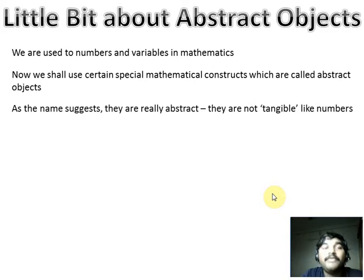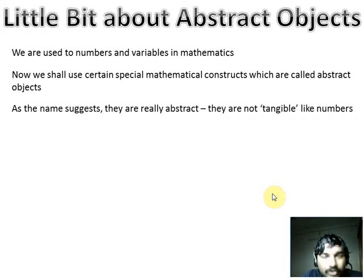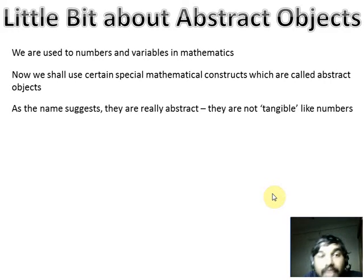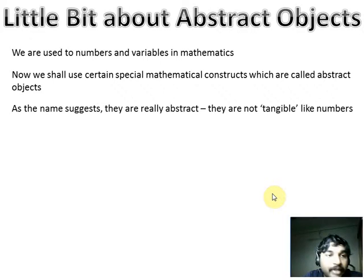We'll delve a little bit more into what these abstract objects are — they are really abstract mathematical objects. We will also see why we need them, why they are absolutely essential, and why they are actually a very convenient way of representing the system. It actually simplifies the representation quite a bit.